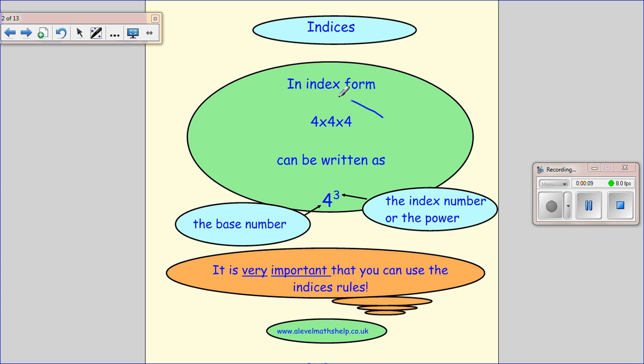The index form of 4 times 4 times 4 is 4 cubed, where the 3 is up in the air. The 3 is called the index number or the power, and the 4 is the base number. So the 3 says we're going to multiply 4 by itself 3 times.